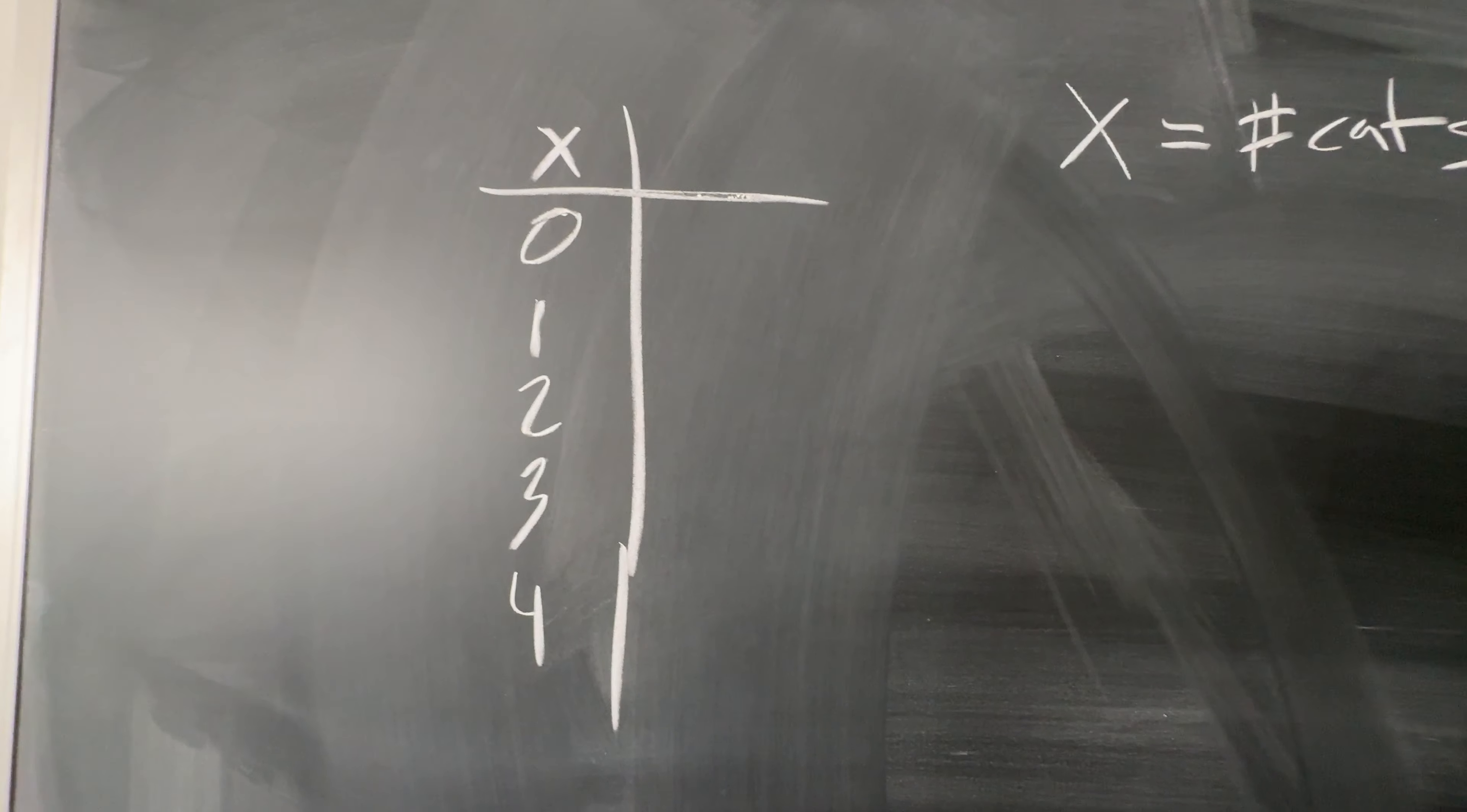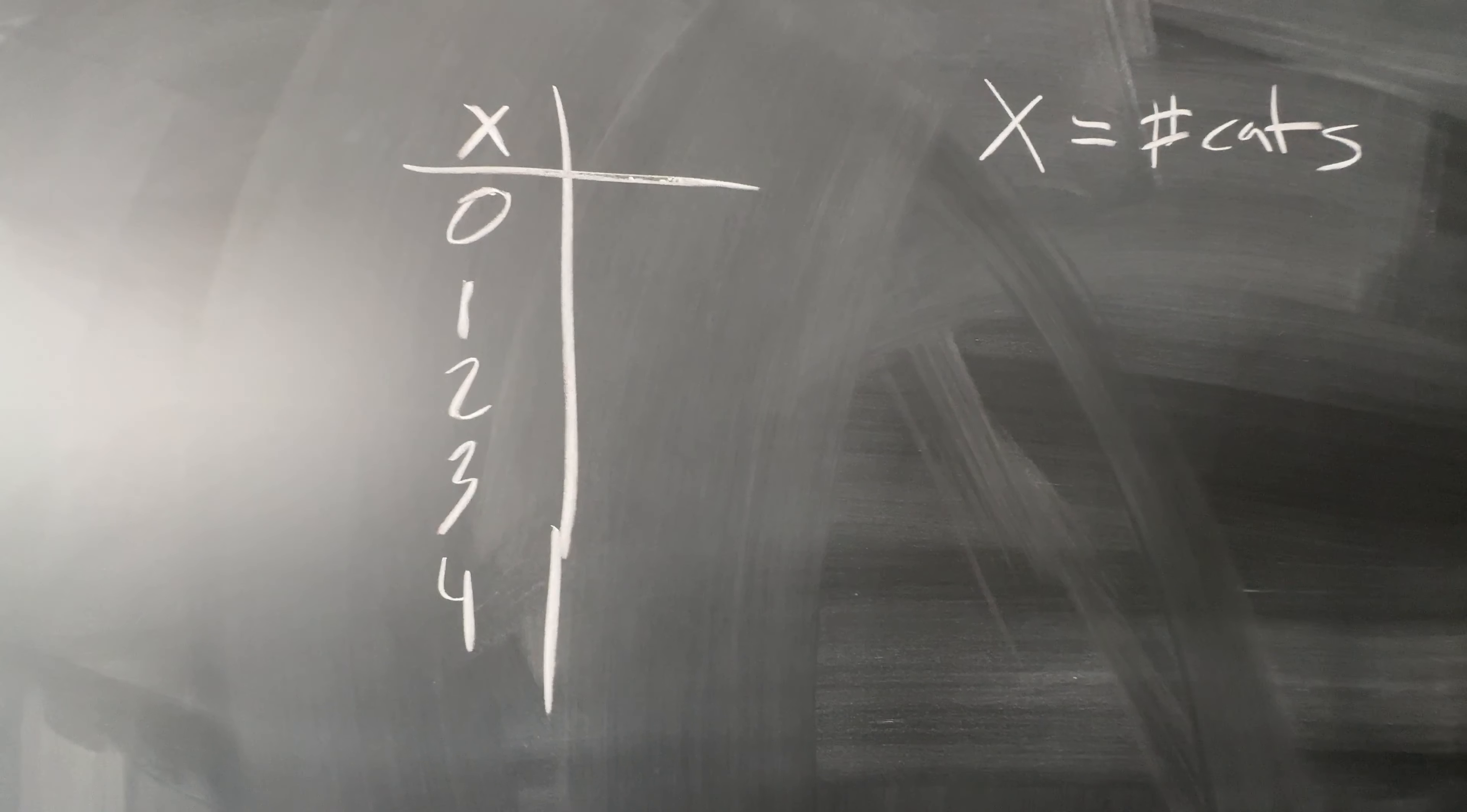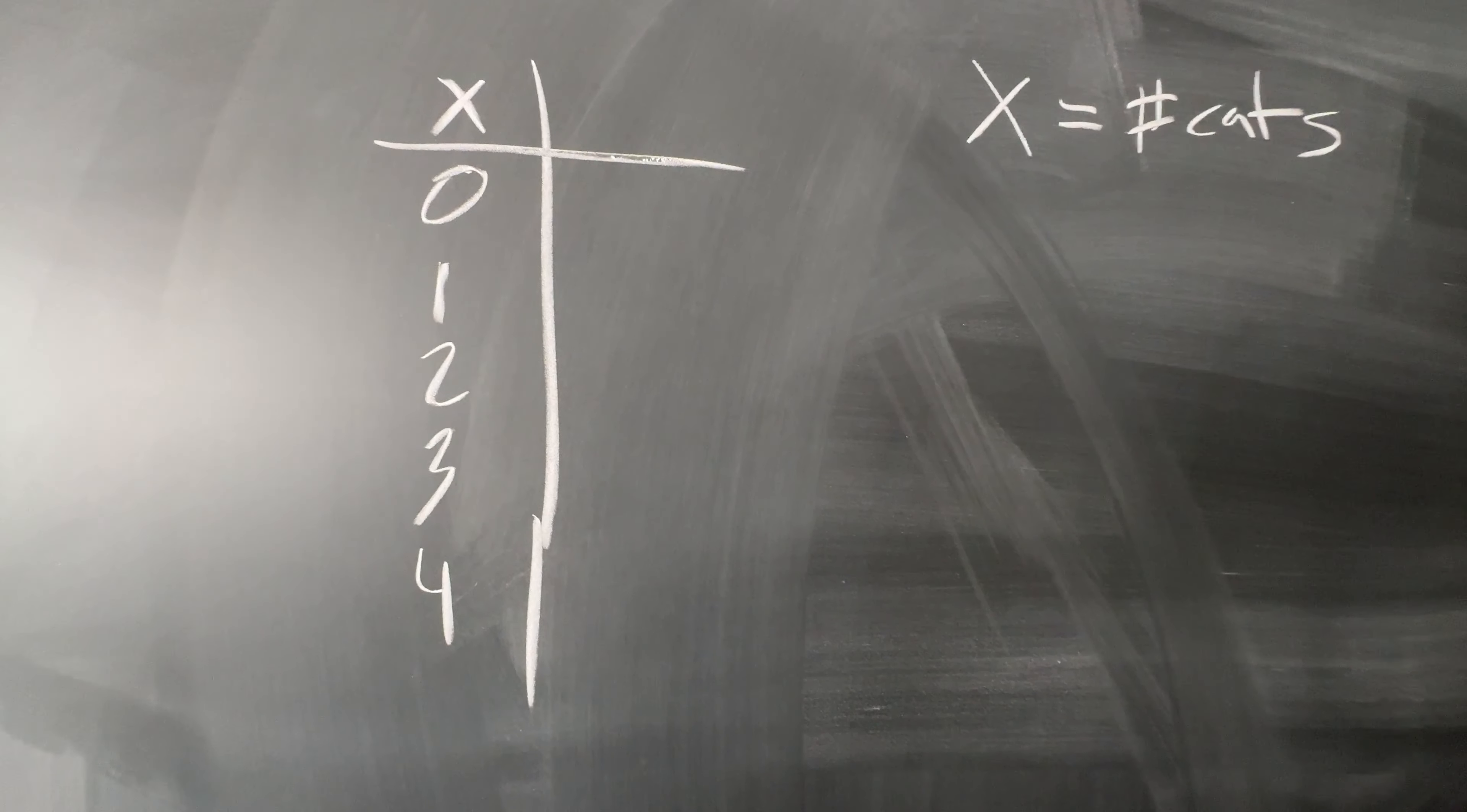Usually, probability distribution tables are tables that are models of what you're trying to study or historical data that you've had for a long time. So N is very large, usually.